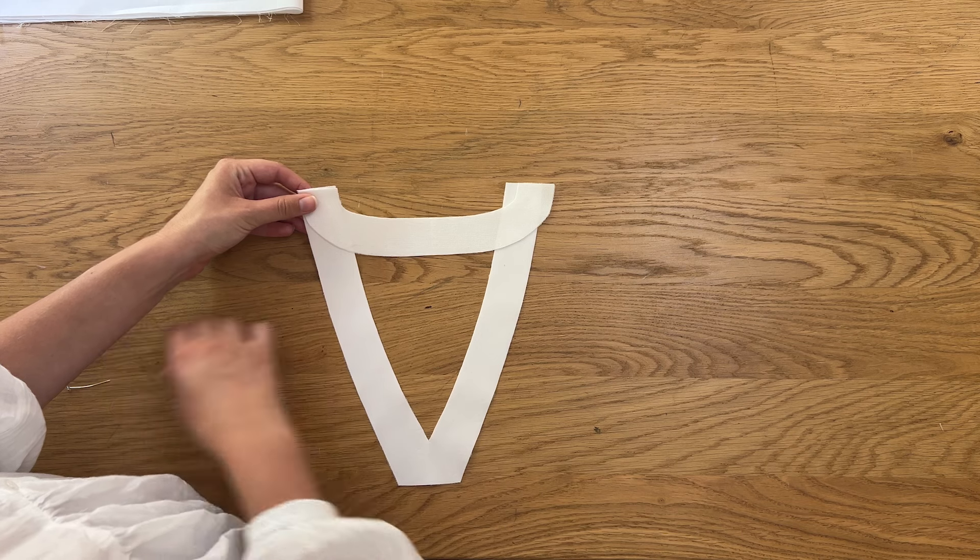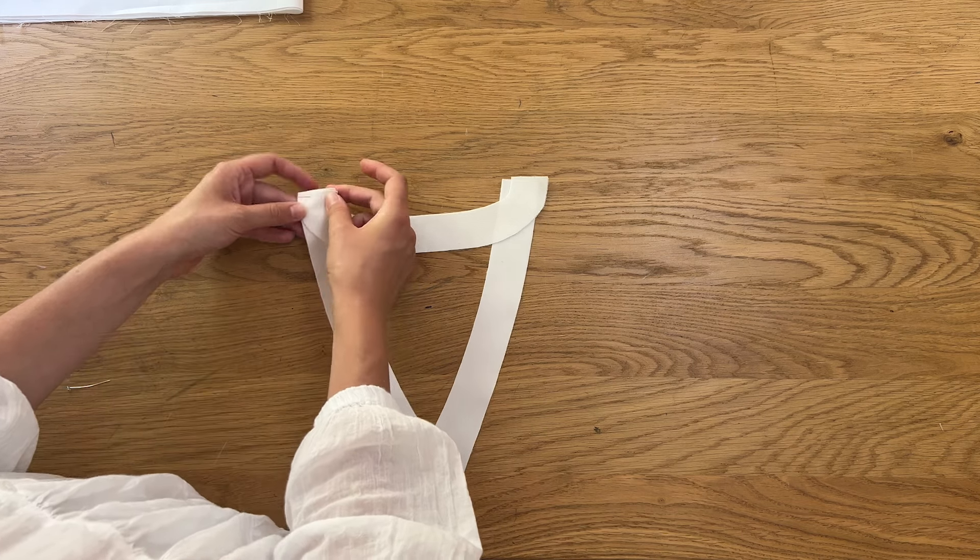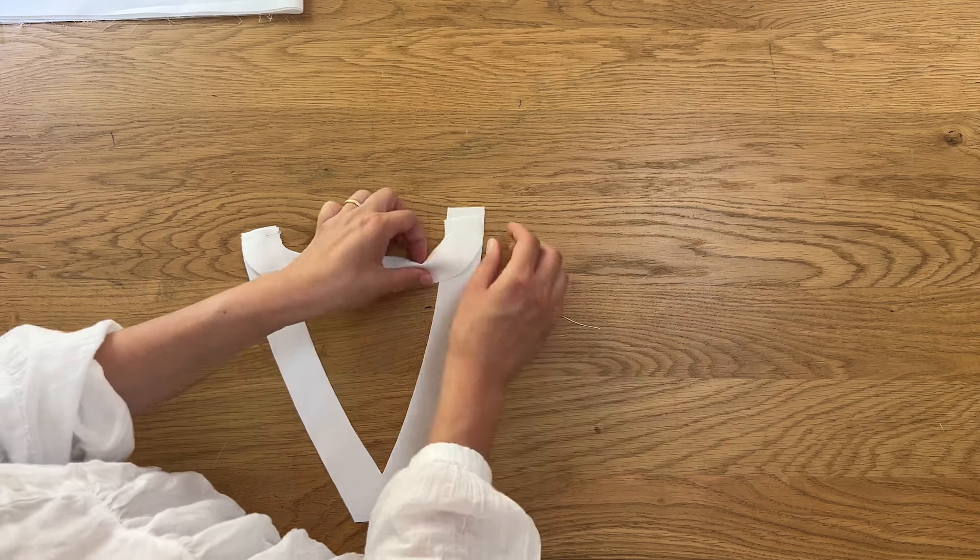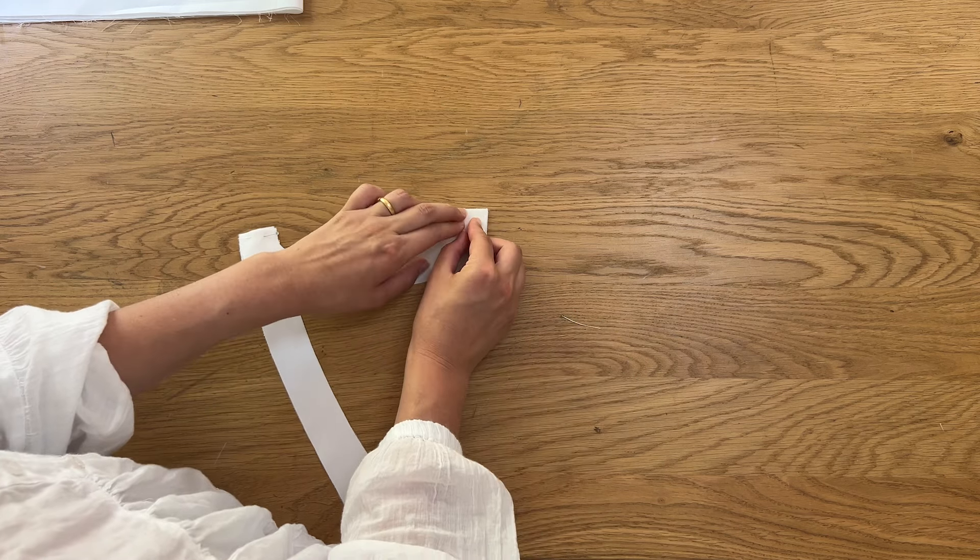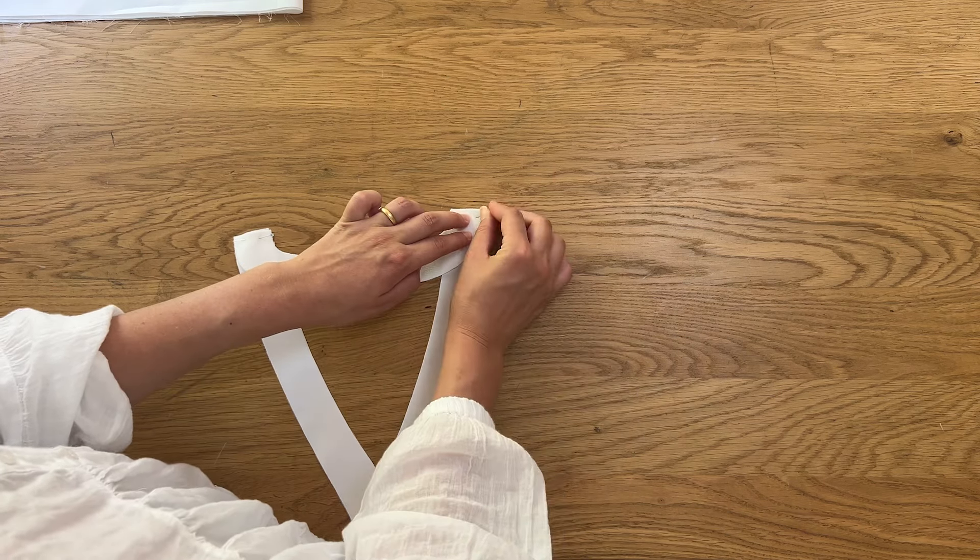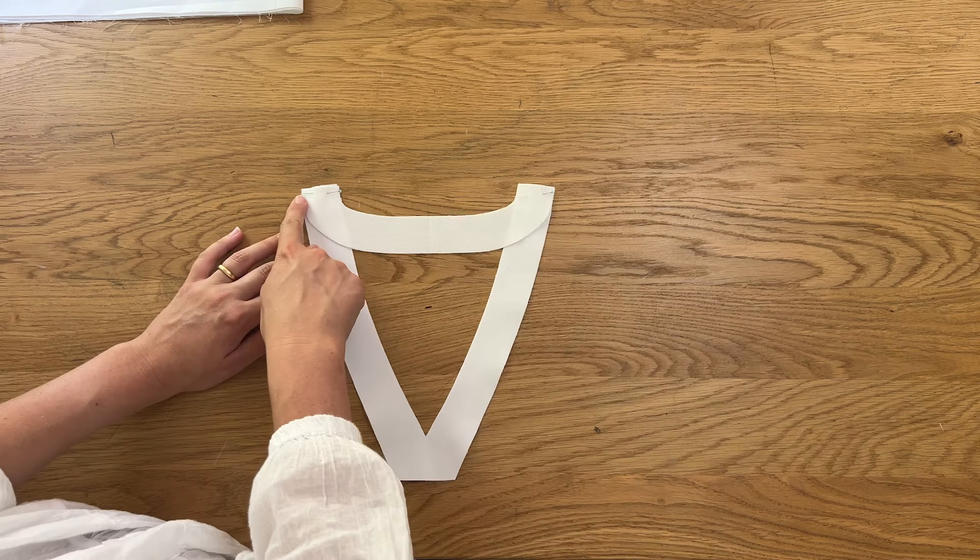Depending on your fabric choice you can iron on fusing to the wrong side of your facings to stabilize them. Pin the shoulder seams of the facings with the right sides together and sew with a one centimeter seam allowance.